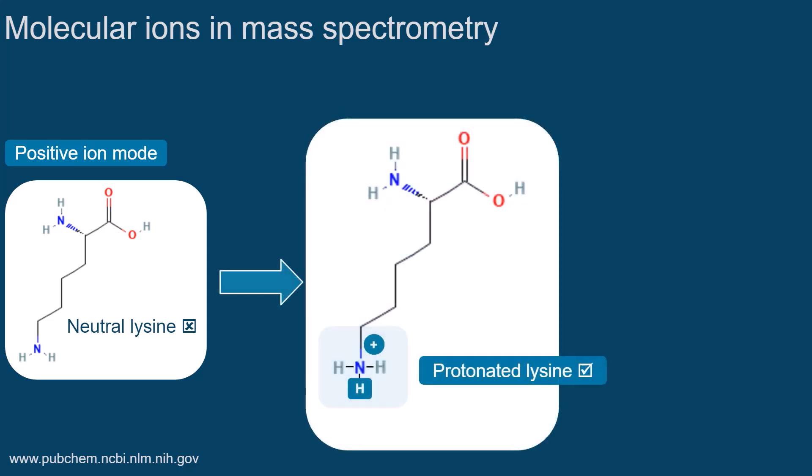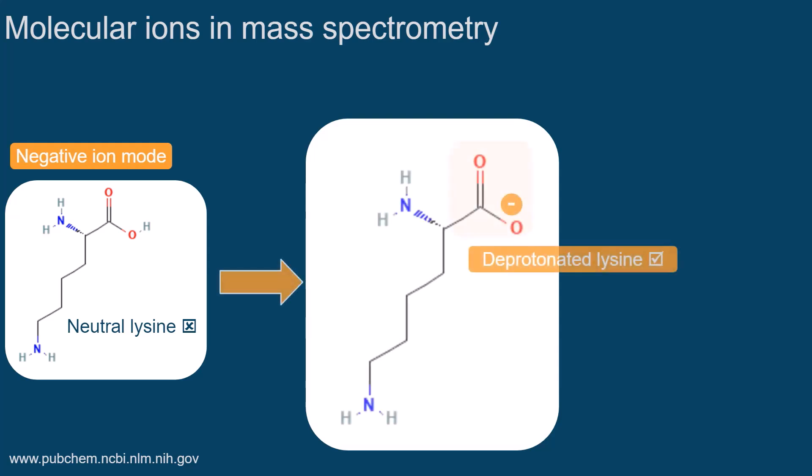In the positive ion mode, the ions can usually be detected in their protonated form. In the negative ion mode, most molecules form ions by the loss of a proton.